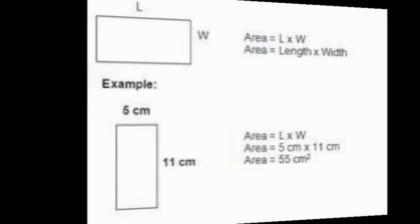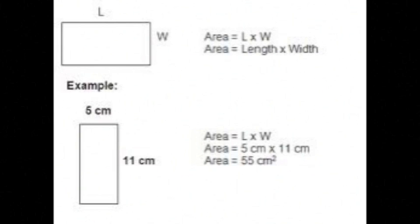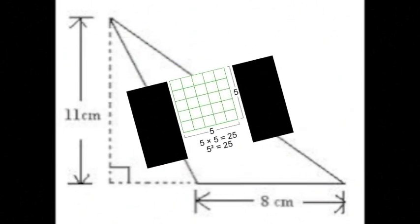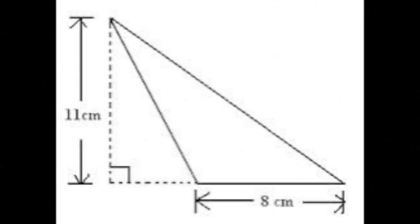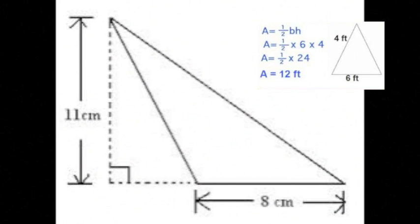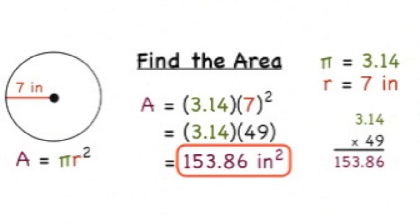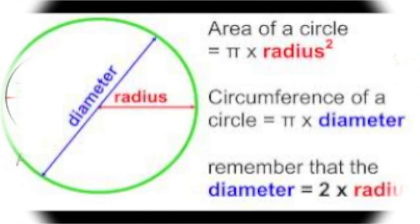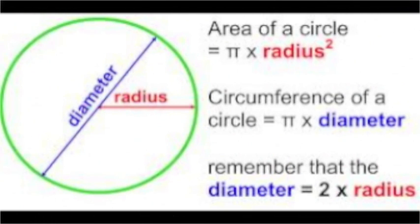The area of a rectangle equals length times width. The area of a square is the length of its side squared. The area of a triangle equals one half base times height. The area of a circle equals pi times radius squared. The circumference of a circle equals two times pi times radius.